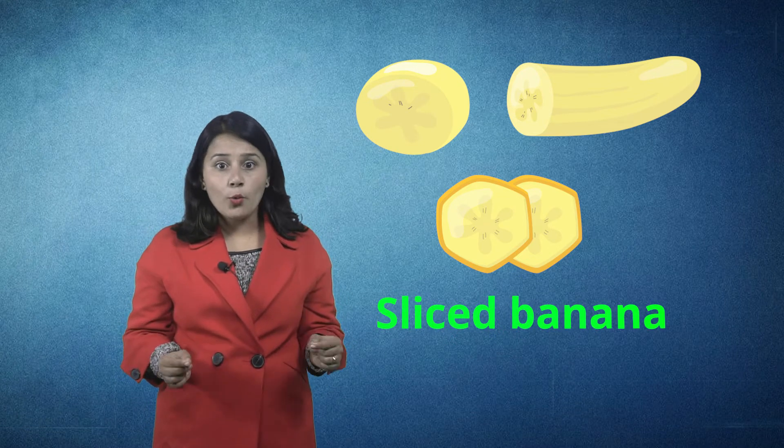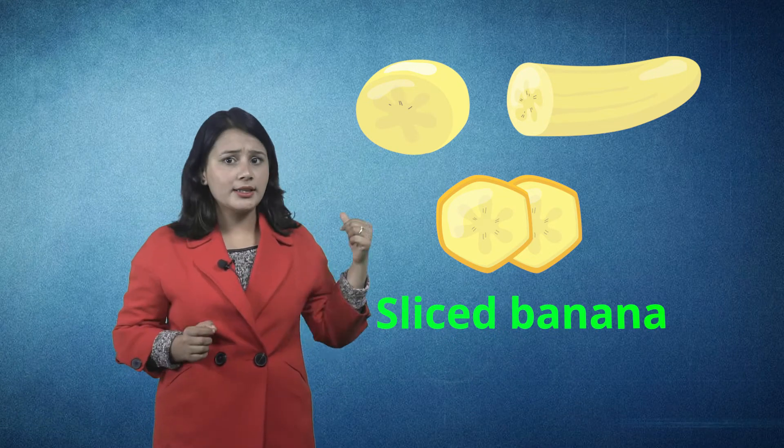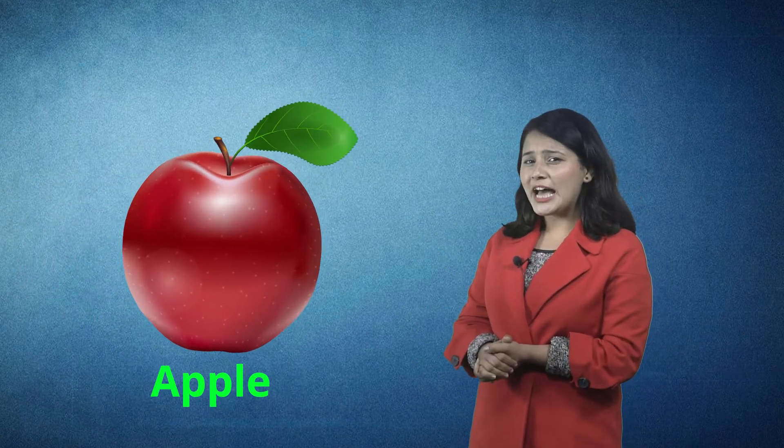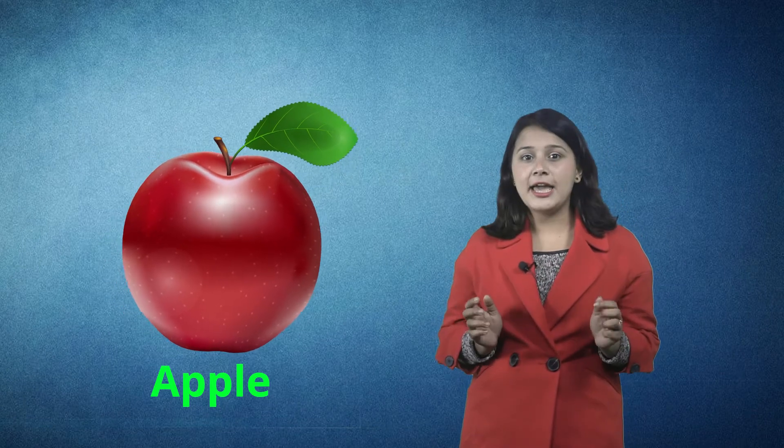Here is a finely sliced banana. When we cut a banana like this, it is called a sliced banana. You can also see a red apple. Do you know that eating an apple every day is very good for our health? Well, I eat apple every day.